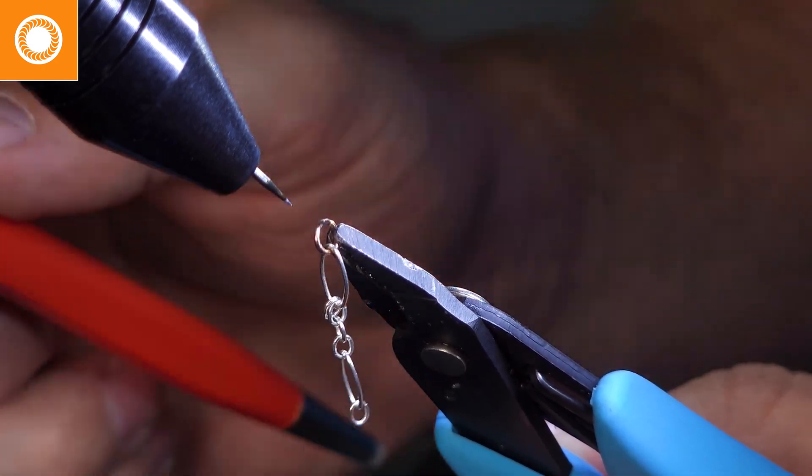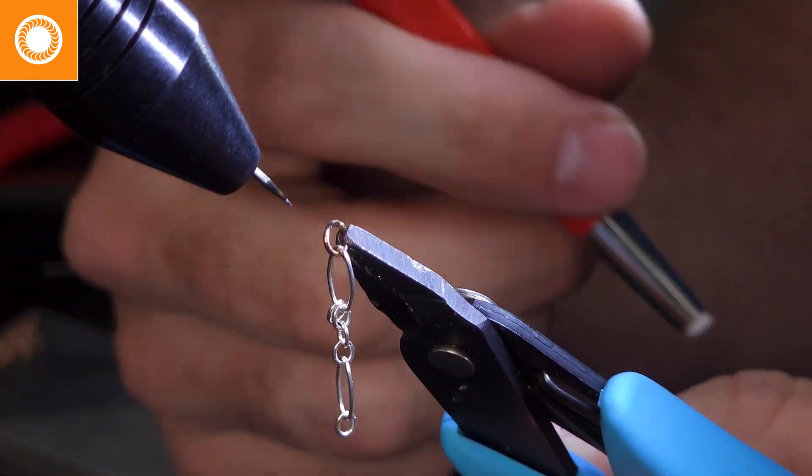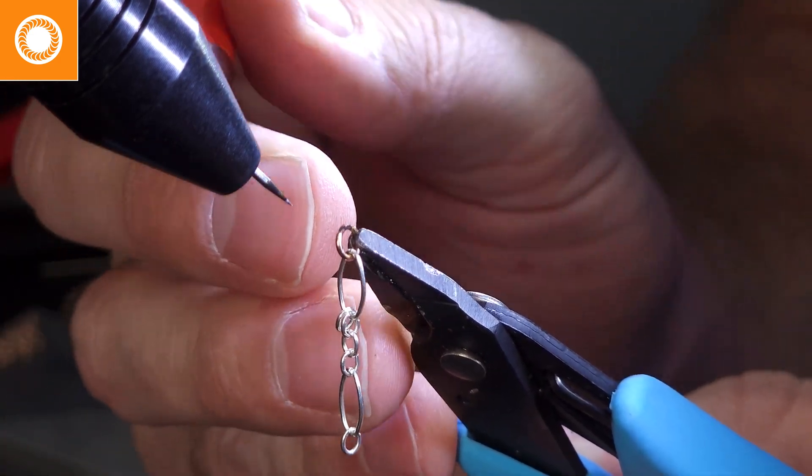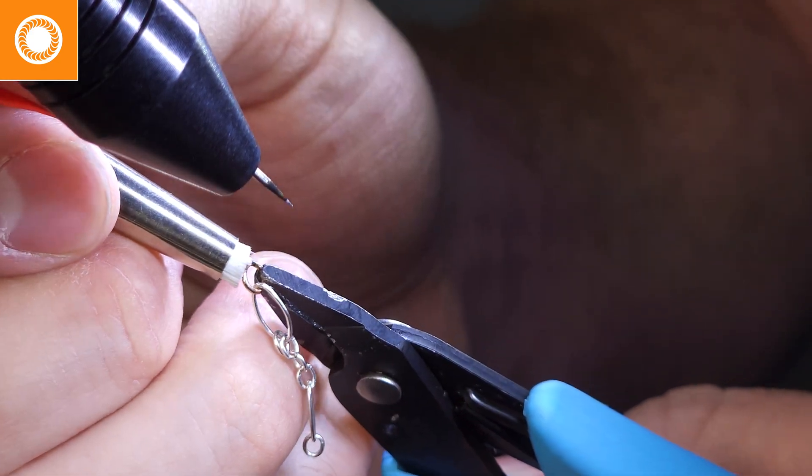Every Orion welder comes included with one of these red brushes. This is a fiberglass brush that you just twist out. You can use this brush and just quickly polish over that weld spot.